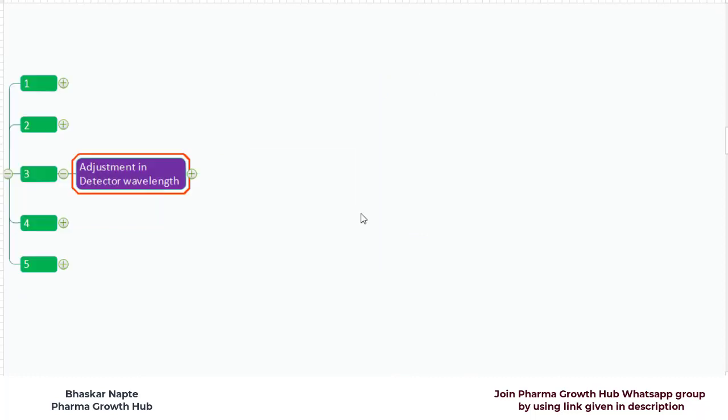According to USP General Chapter 621, the adjustment in detector wavelength is not permitted. The discussion for this video is: what is the reason that USP General Chapter 621 does not allow any change in the detection wavelength?